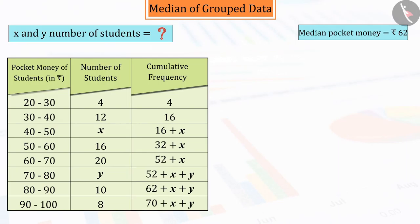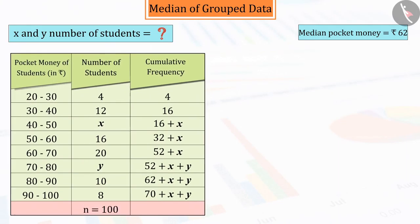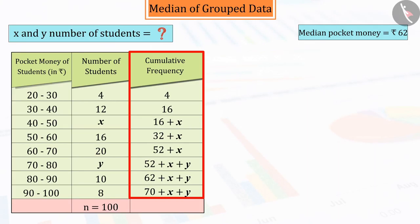It is given that the total number of students is 100. Therefore, the value of the last line of the cumulative frequency 70 plus x plus y will be equal to the total number of students, which we represent by equation 1.